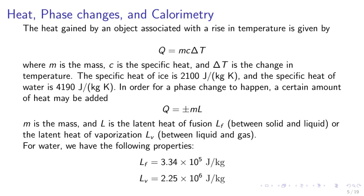Heat, phase changes, and calorimetry. The heat gained by an object associated with a rise in temperature is given by Q equals mc delta T, where m is the mass, c is the specific heat, and delta T is the change in temperature. The specific heat of ice is 2100 joule per kilogram Kelvin. The specific heat of water is 4190 joule per kilogram Kelvin.